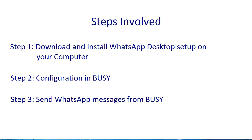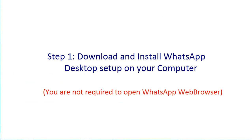There are three steps involved. Step 1 is to download and install WhatsApp desktop setup on your computer — the computer on which Busy is installed. Please note, you are not required to open WhatsApp web browser. Step 2 is configuration in Busy, and Step 3 is sending WhatsApp messages from Busy.